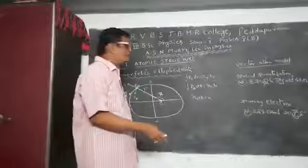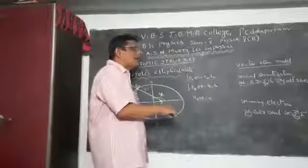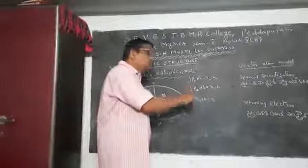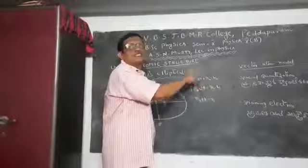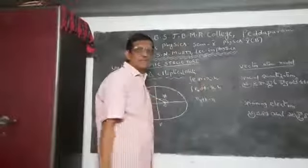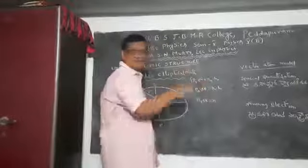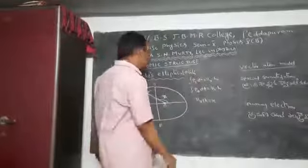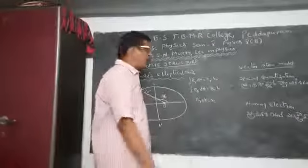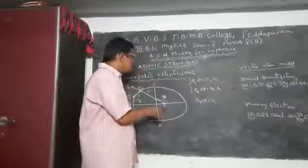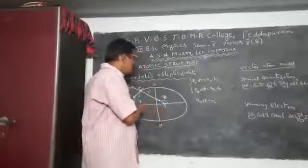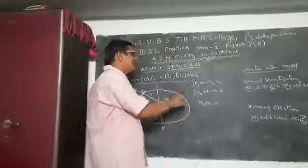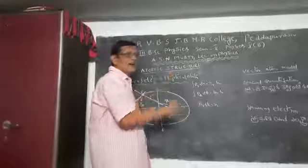Where N is the principal quantum number. A new azimuthal quantum number K is introduced here. If K equals zero, the electron would move in a straight line, which is physically wrong. That is why K can never be equal to zero.